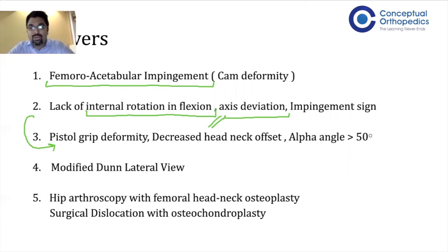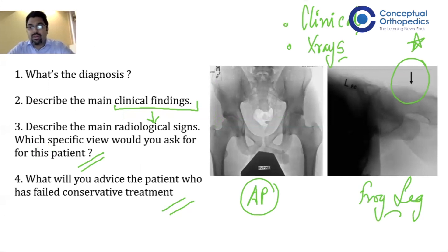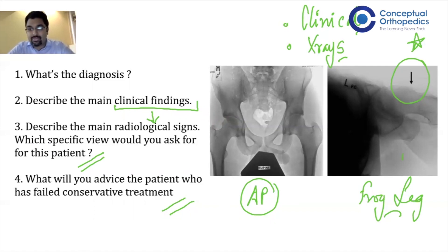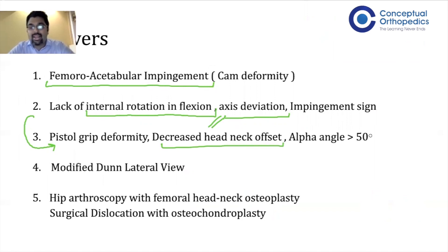Going back to the x-ray: on the lateral view, you can see the pistol grip deformity. If you imagine the femur as the grip of a pistol, this is a very classical finding of femoral acetabular impingement. The other two radiological signs are decreased head-neck offset and increased alpha angle.